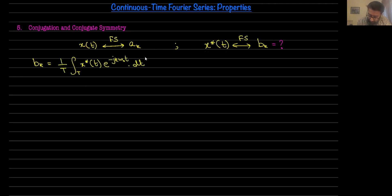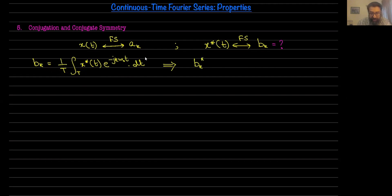So from here, my objective is to relate this expression to a_k. One thing I observe is the conjugate on x. I want to get rid of this conjugate by taking conjugation on both sides. So if I take conjugation on both sides, on the left hand side I get b_k conjugate, which is equal to one over T, the integral over T, of x(t) times e raised to power plus j k omega-naught t, dt — where the reason I have a plus here is because of the conjugation operation.